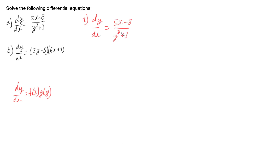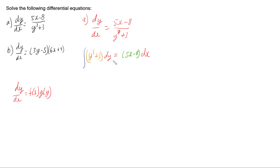To separate out the variables and get y's on one side and x's on the other, I multiply both sides by (y cubed plus 3) — that brings the (y cubed plus 3) up in front of the dy — and then bring the dx over, so that gives us (5x minus 8) in front of the dx. So I've multiplied both sides by (y cubed plus 3) and by dx, and now I can integrate both sides, since the left side is only in terms of y and the right side only in terms of x.